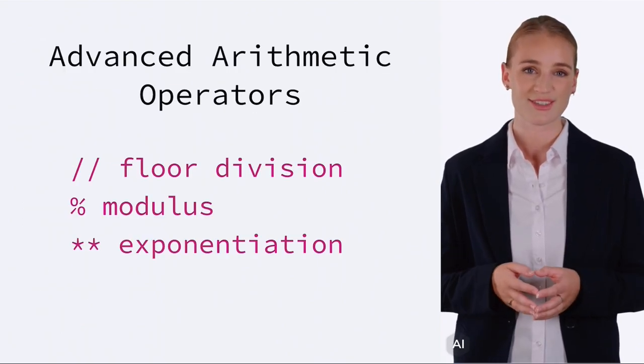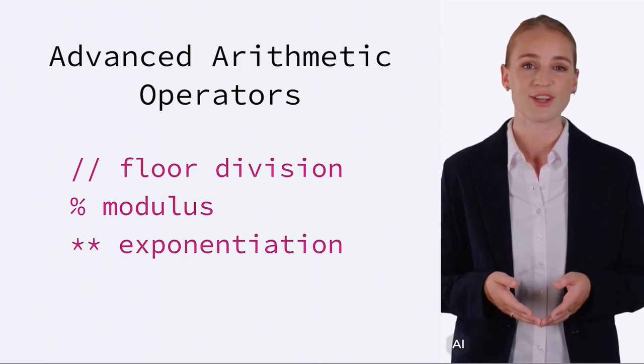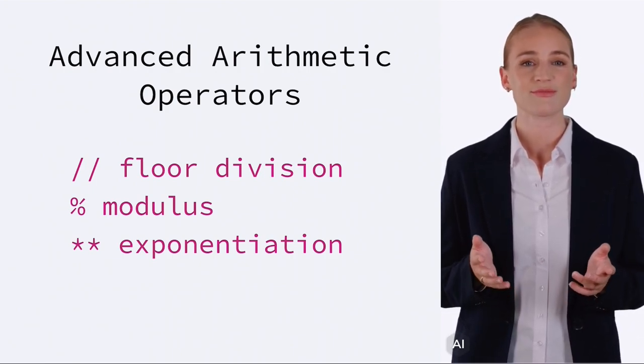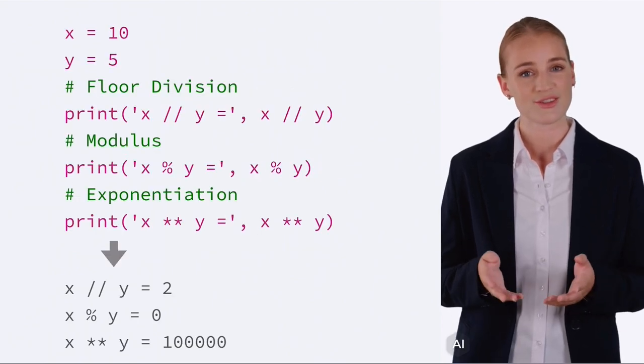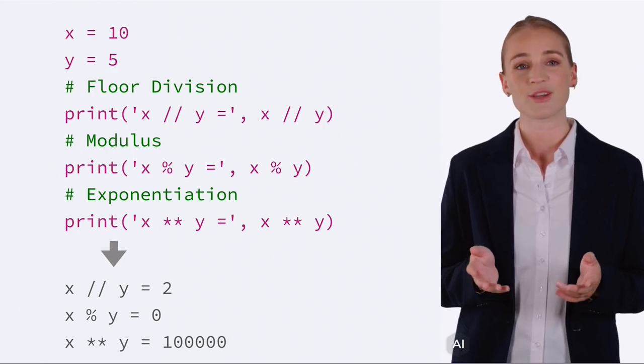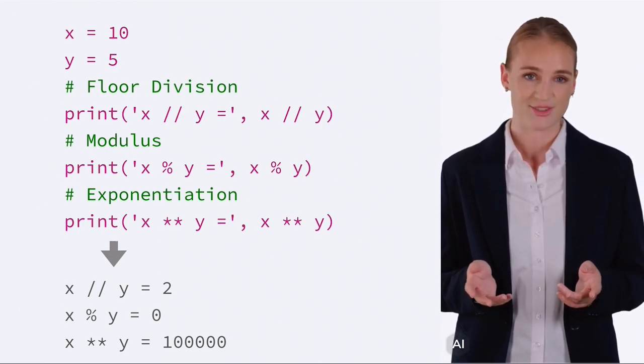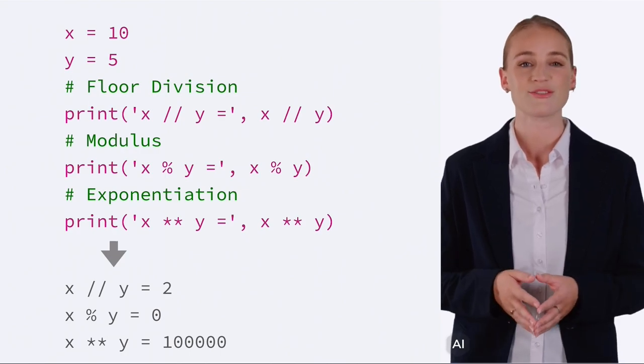Continuing with operators, let's look at some more advanced arithmetic operators: floor division, modulus, and exponentiation. Floor division gives the largest whole number that is less than or equal to the result. Modulus gives the remainder of a division. Exponentiation raises the first number to the power of the second.